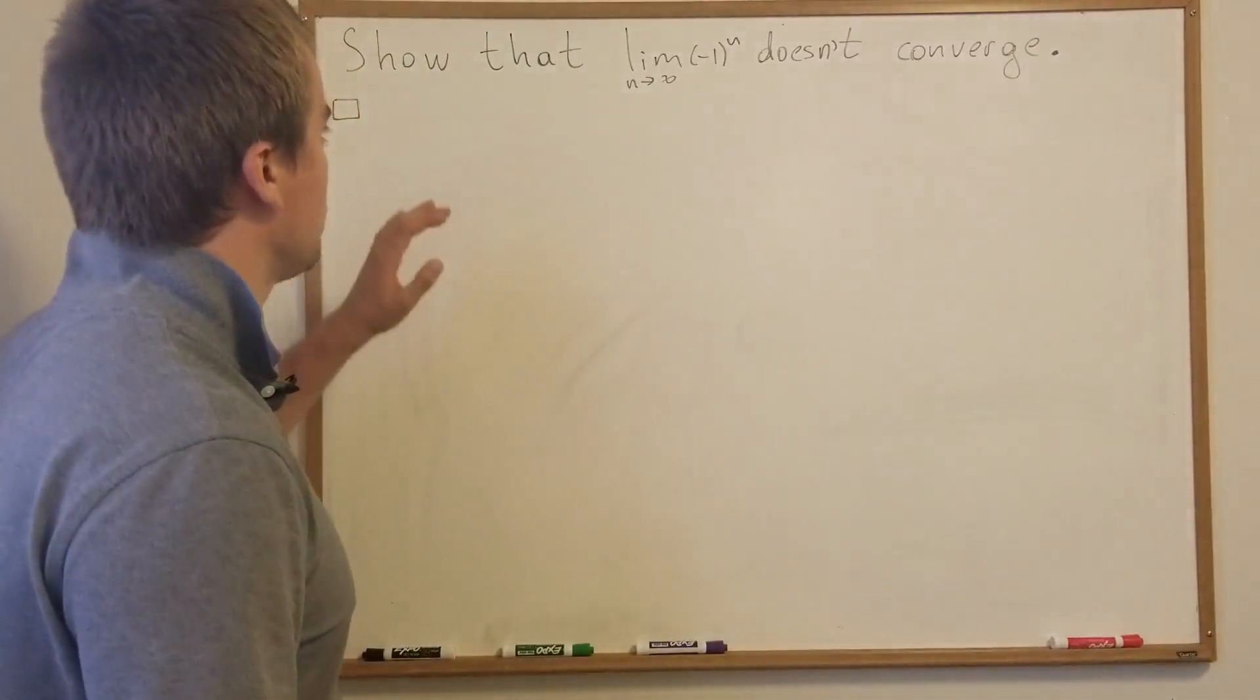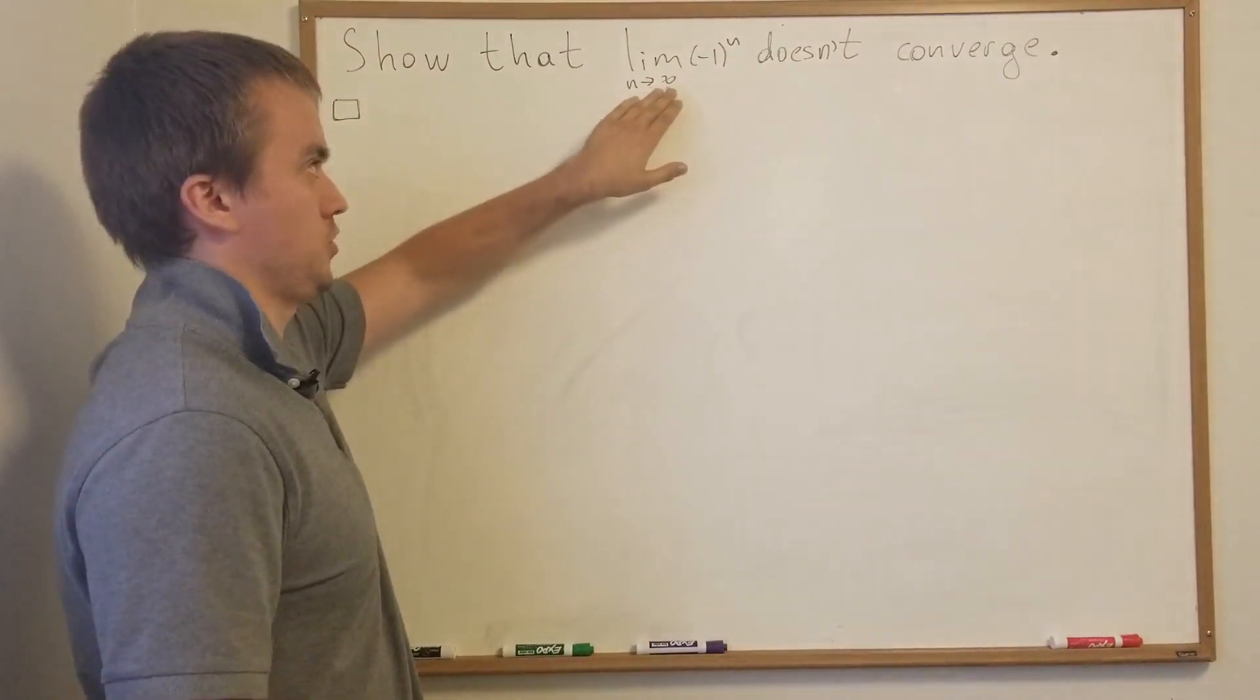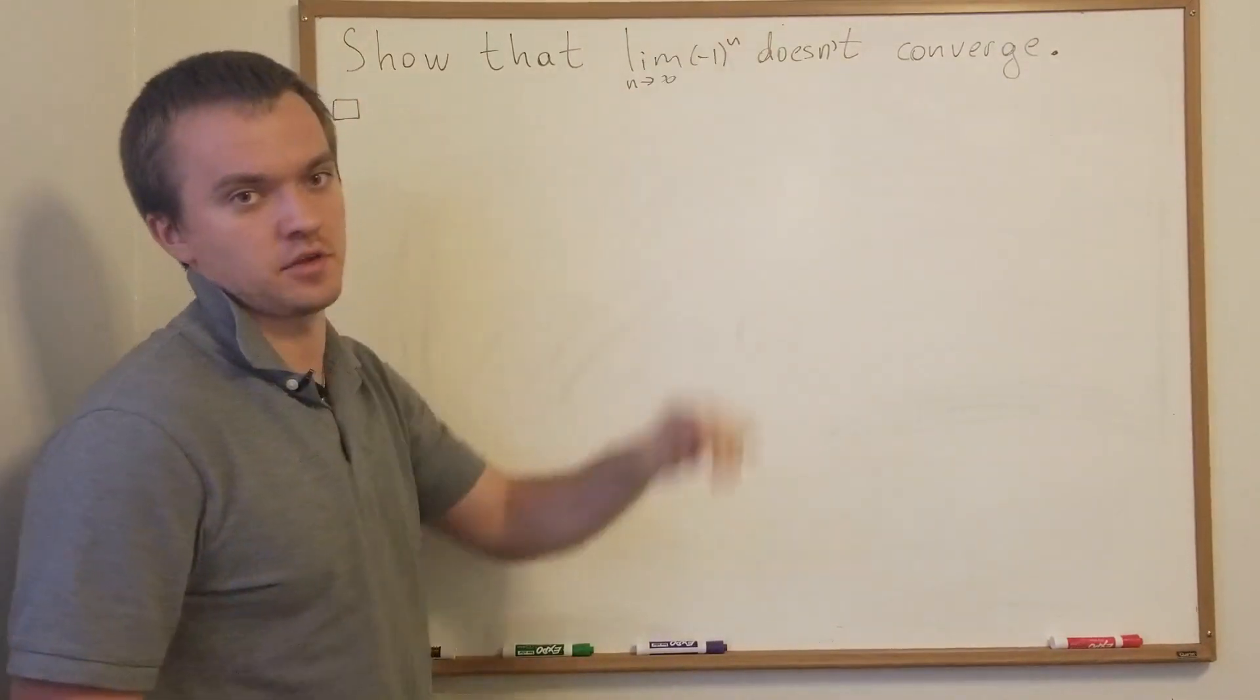Hello guys, in this video I want to give a super short proof that the limit of negative one to the n when n approaches infinity doesn't converge.